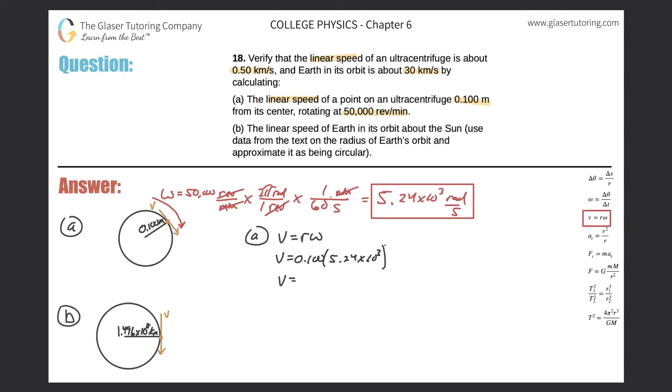Or you just reduce this value by 1 because it's just multiplying by a tenth. So it's 5.24 times 10 to the 2nd. Remember, this is meters per second. Now that's the answer. But we have to confirm that it matches up to 0.5 kilometers per second.